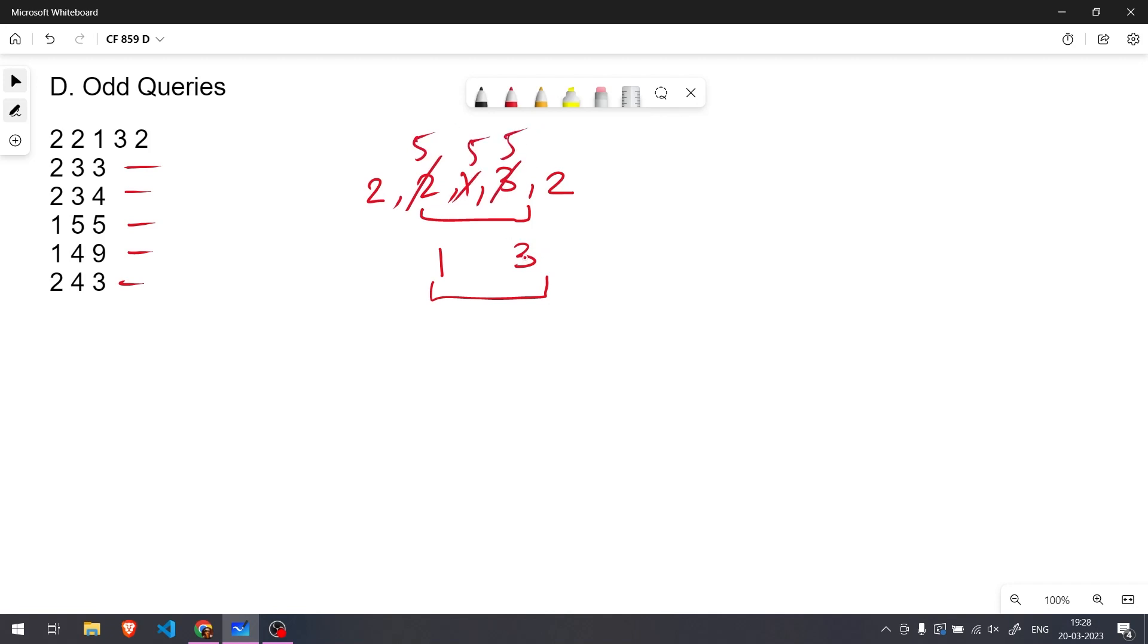Suppose this is a query, I am just taking an example. So what happens? We need to check that after the operation, is the sum of all the elements even or odd?